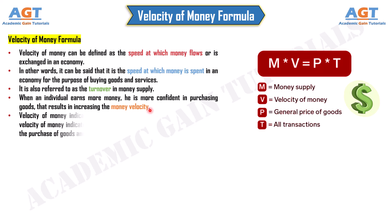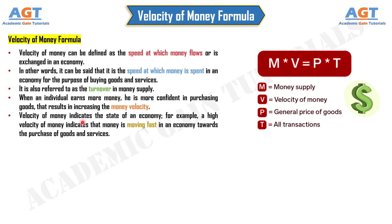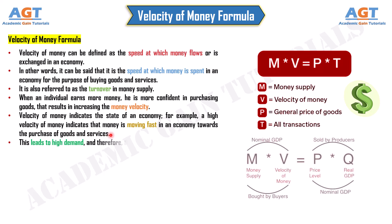Velocity of money indicates the state of an economy. For example, a high velocity of money indicates that money is moving fast in an economy towards the purchase of goods and services. This leads to high demand, and therefore the production will be increased.